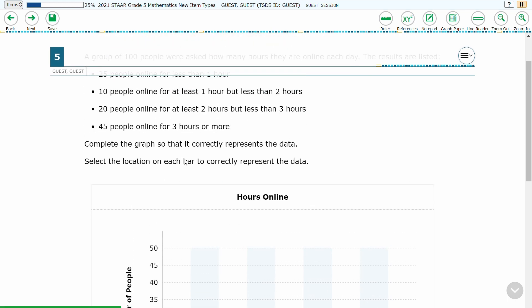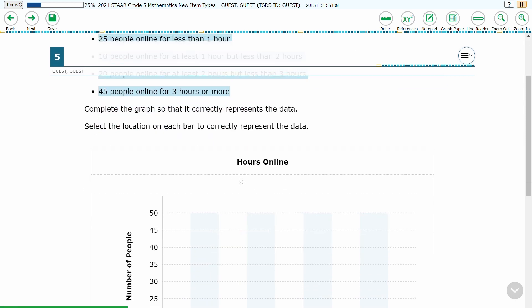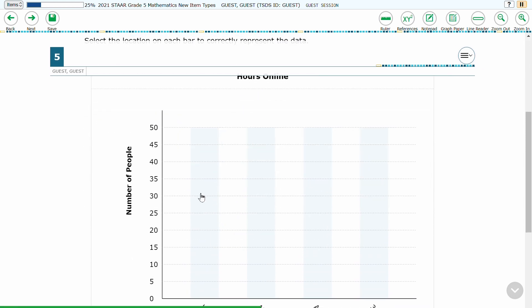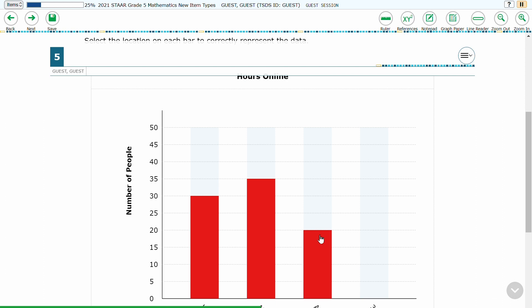The student will be presented with data in the item and a blank bar graph to complete. The student will indicate how high within the shaded area they want each bar of the graph to be, based on the data given.